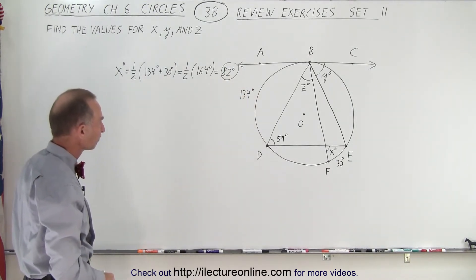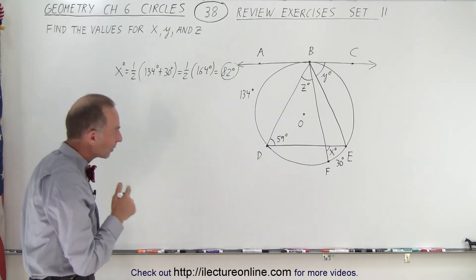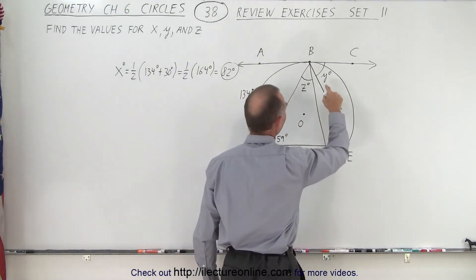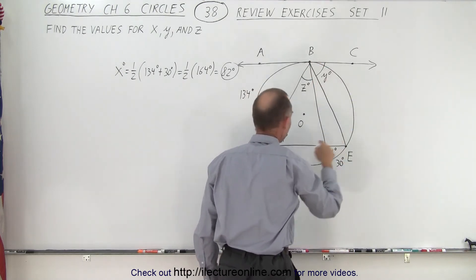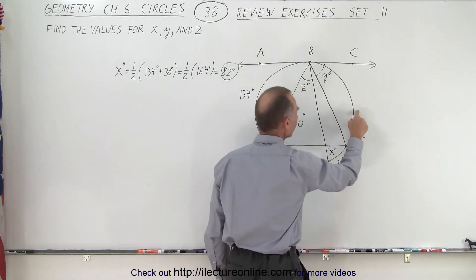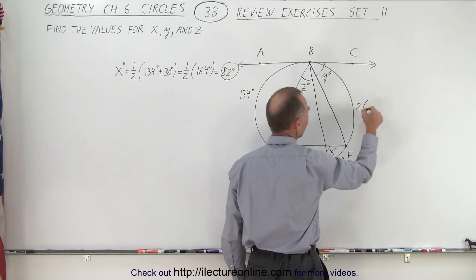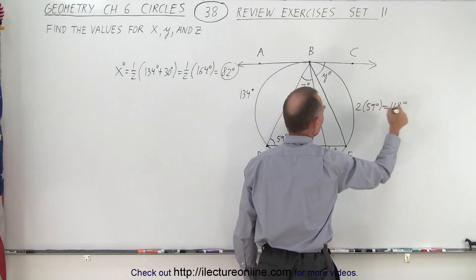That was relatively straightforward. How about y? Well, to find y, we need to have the measure of this arc right here. But notice we have the angle on this side, and we know that this angle here is half the measure of this. So this here would be 2 times 59 degrees, which is 118 degrees.